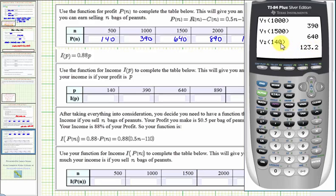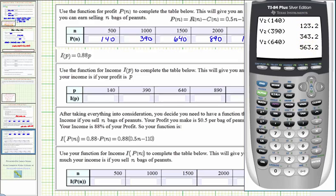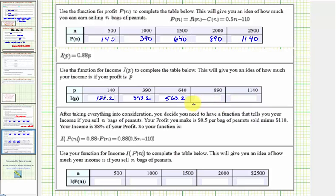Now we'll find these function values from the home screen. So we'll go back to the home screen by pressing second mode for quit. Remember, our new function is in Y2, so when P equals 140, we want to find Y2 of 140. So we'll press VARS, right arrow, enter. Y2 is 2, so we'll press 2, and then in parentheses, 140. Enter. So Y of 140 equals 123.2, or $123.20. Let's go ahead and find a couple more of these.